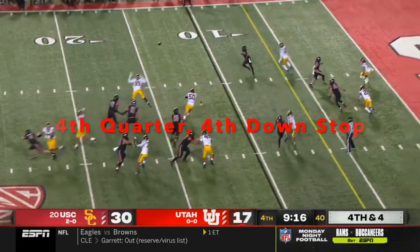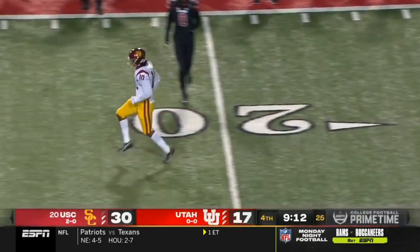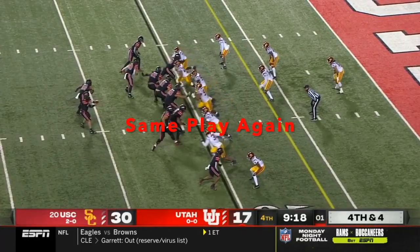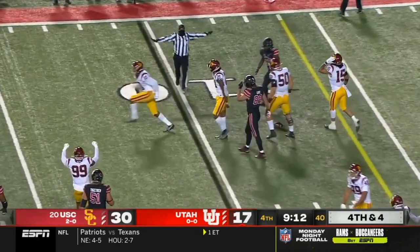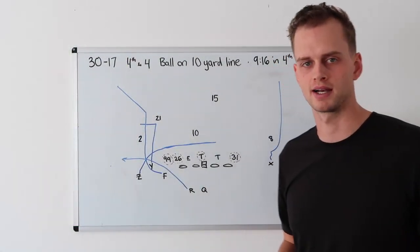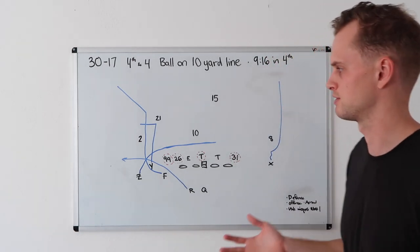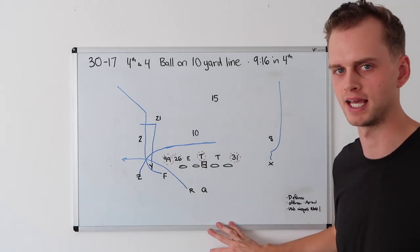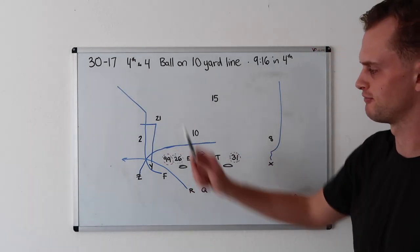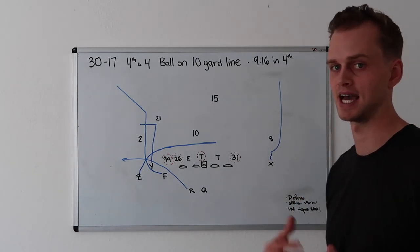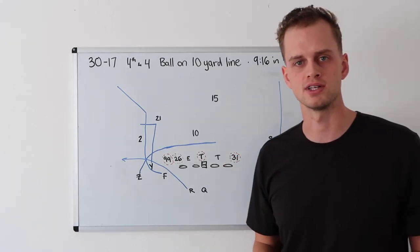They get the ball snapped on fourth and four, pressure comes over the top, and that one is going to be almost intercepted. It's incomplete, USC turns it over on downs. This ends up being the most important play thus far. Fourth quarter, late in the game, gotta have it. This play was crucial. USC's up 30-17, two-score game. It's fourth and four, ball on the 10-yard line. Utah elects to go for the touchdown rather than the field goal, 9:16 left in the fourth.